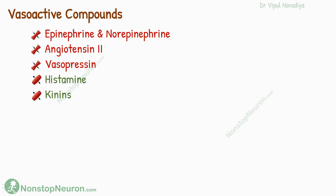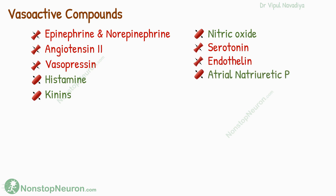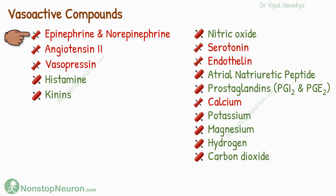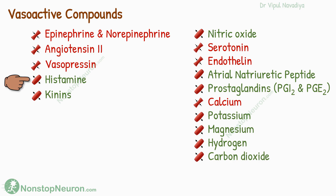So these were the top 5 vasoactive compounds. Some honorable mentions that could not make this list are nitric oxide, serotonin, endothelin, atrial natriuretic peptide, some prostaglandins, and even ions like calcium, potassium, magnesium, hydrogen, and carbon dioxide. In summary, important vasoconstrictors are epinephrine, norepinephrine, angiotensin 2, and vasopressin. And vasodilators are histamine and kinins.